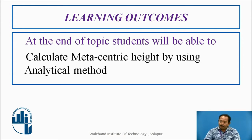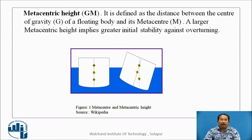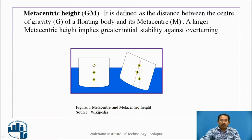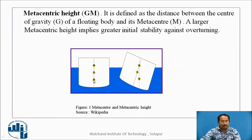Let's concentrate on this particular figure. This is a floating body. The uppermost point is M, which is the metacenter. G is the center of gravity, and B is the center of buoyancy.